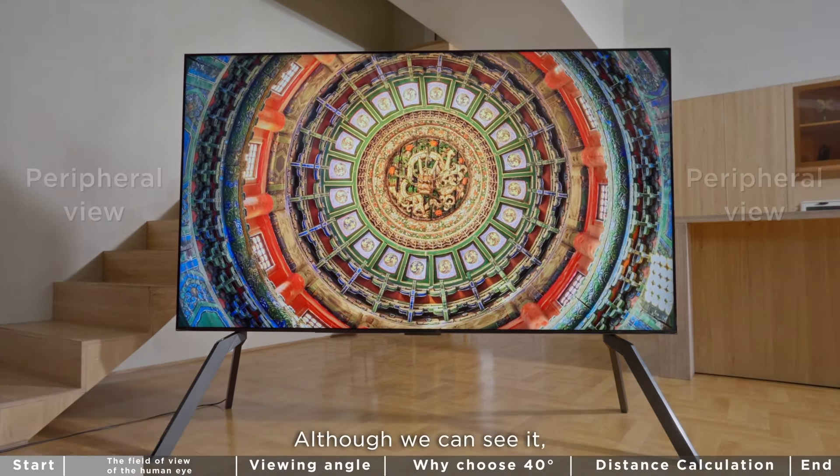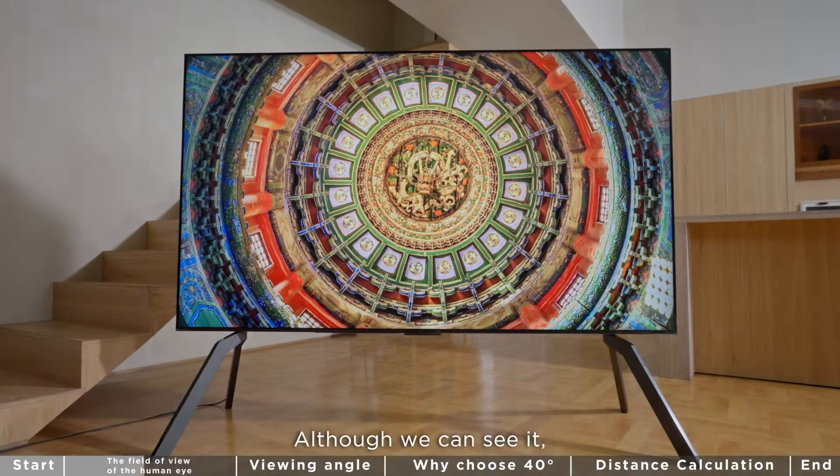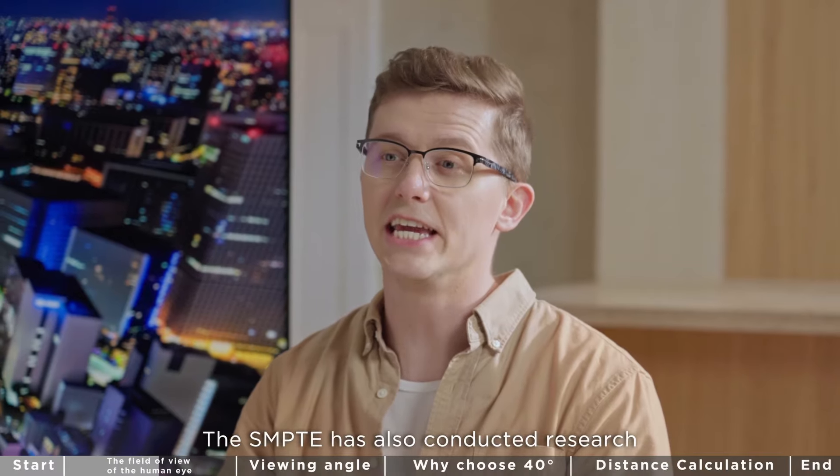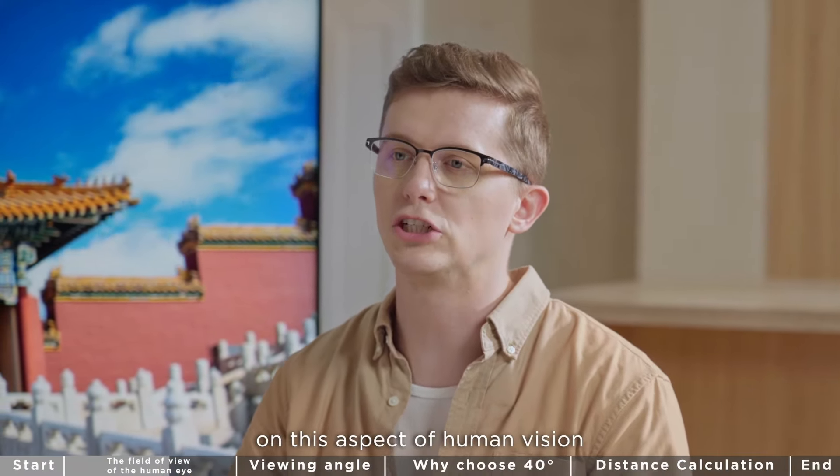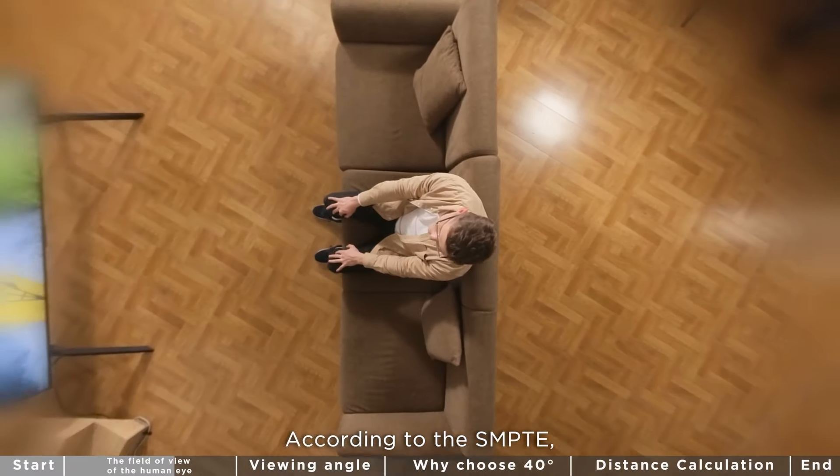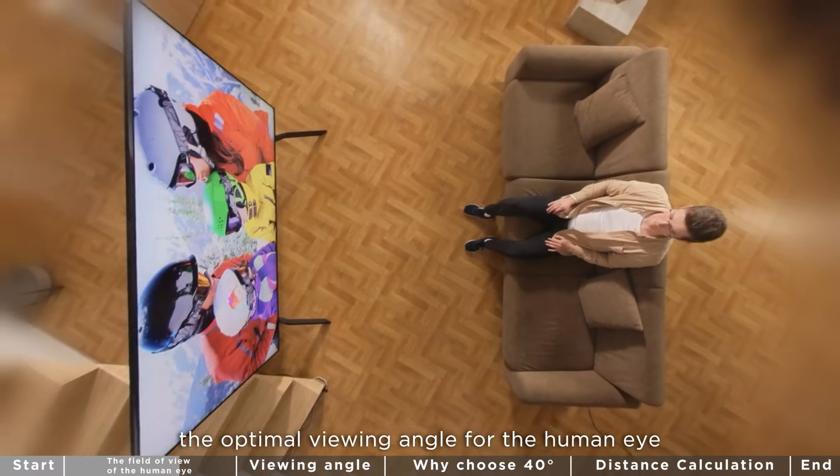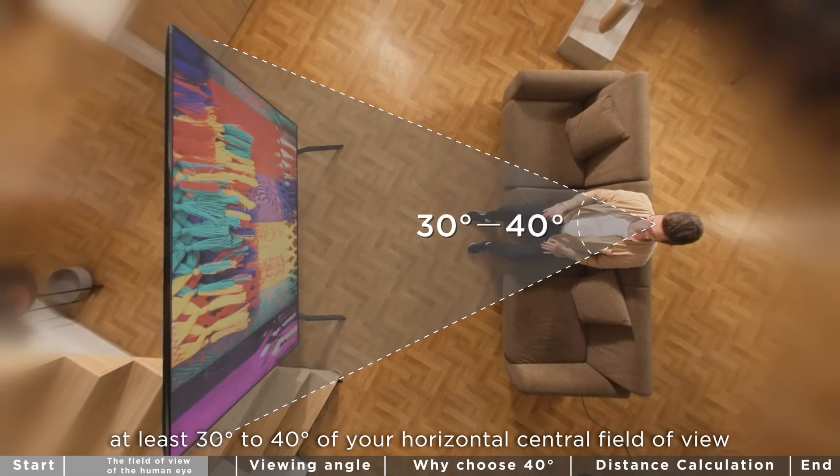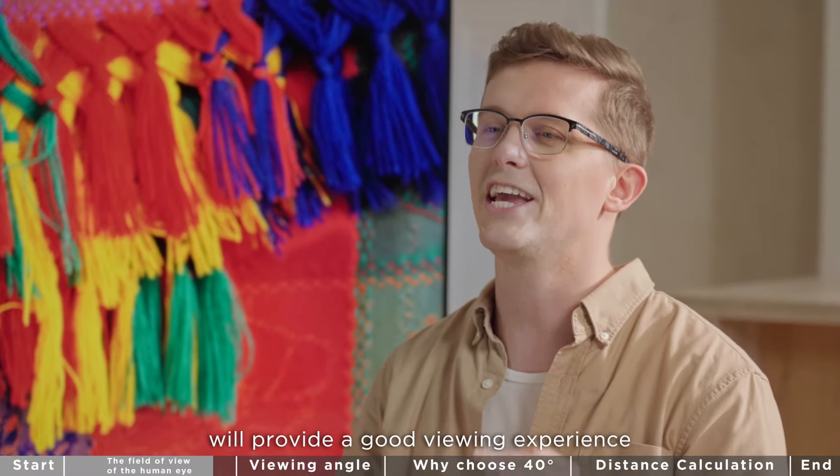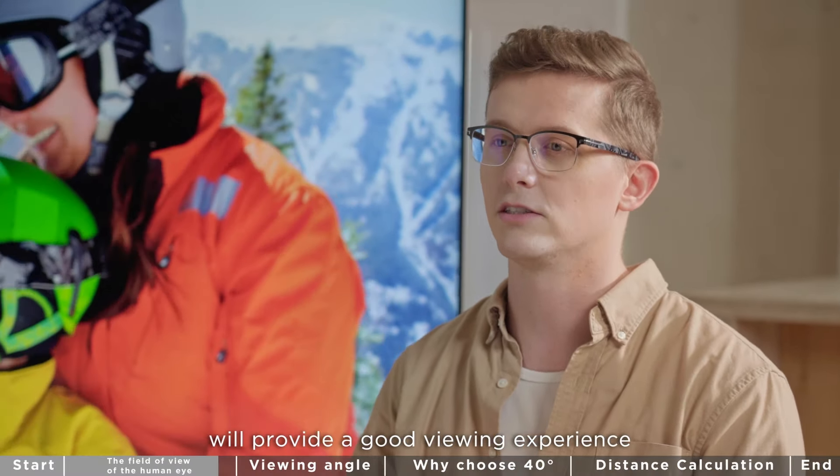Although we can see it, it's not as clear or easily discernible. The SMPTE has also conducted research on this aspect of human vision. According to the SMPTE, the optimal viewing angle for the human eye is between 30 degrees and 40 degrees. This means that sitting at a distance where the screen fills at least 30 to 40 degrees of your horizontal central field of view will provide a good viewing experience.